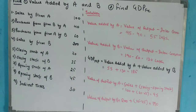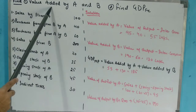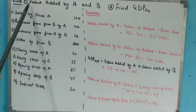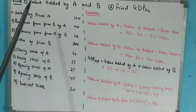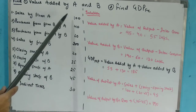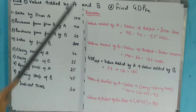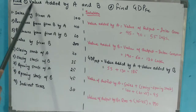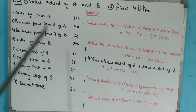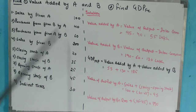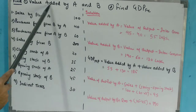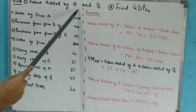We need to find GDP at FC — Gross Domestic Product at Factor Cost. Value Added means how much production we have done, and it refers to GDP at MP. Here we have GDP at MP by Firm A and GDP at MP by Firm B.